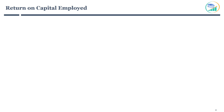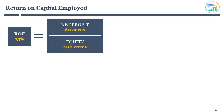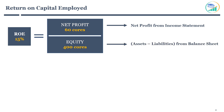I talked about return on equity in a previous session. Return on equity is calculated as net profit divided by shareholders' equity. It takes net profit from the income statement in the numerator — the profit after deducting all expenses including tax. The denominator is equity, which is assets minus liabilities from the balance sheet.